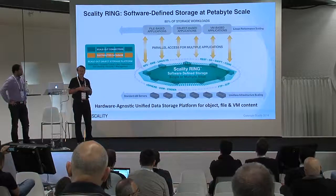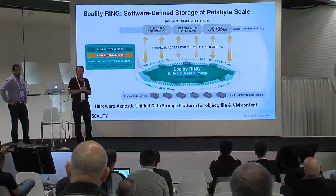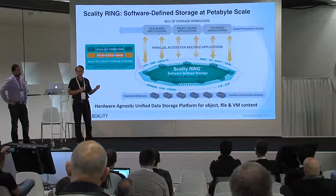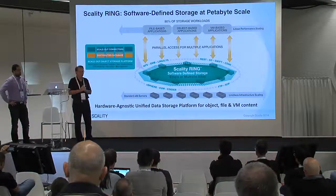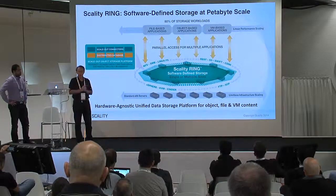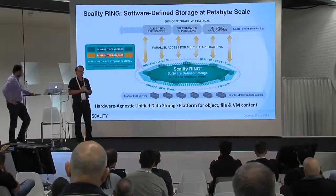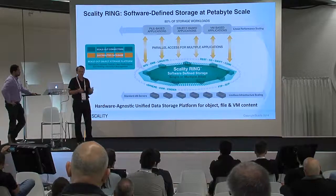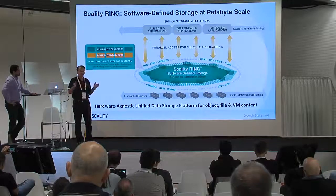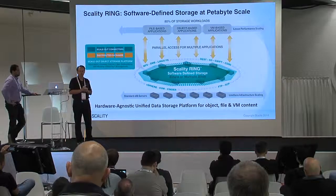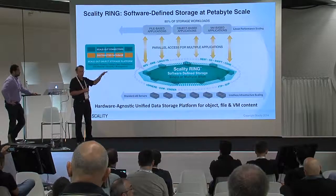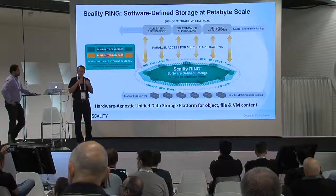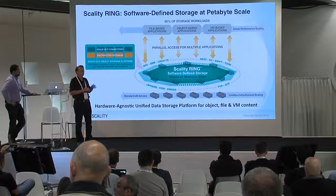On top of that, we layer a variety of data protection schemes. One approach is that every time you store an object, you have multiple replicas — that's a policy we can enable, and the application can choose the class of service: two replicas, or even four. The other approach being taken now is erasure coding, which is an optimal data protection strategy for larger data. If you need to store image data, video data, or large documents, erasure coding is a much more cost-effective, lower-overhead approach with high durability — protecting against multiple failures in the system. The system provides these as choices and policies, letting the application make the right determination.